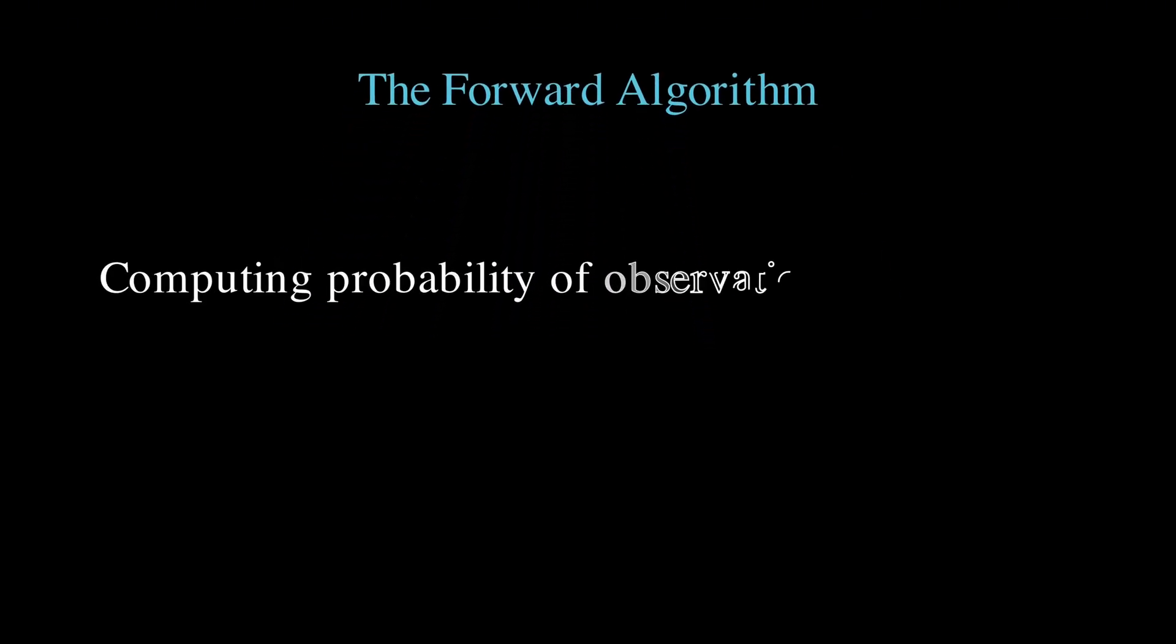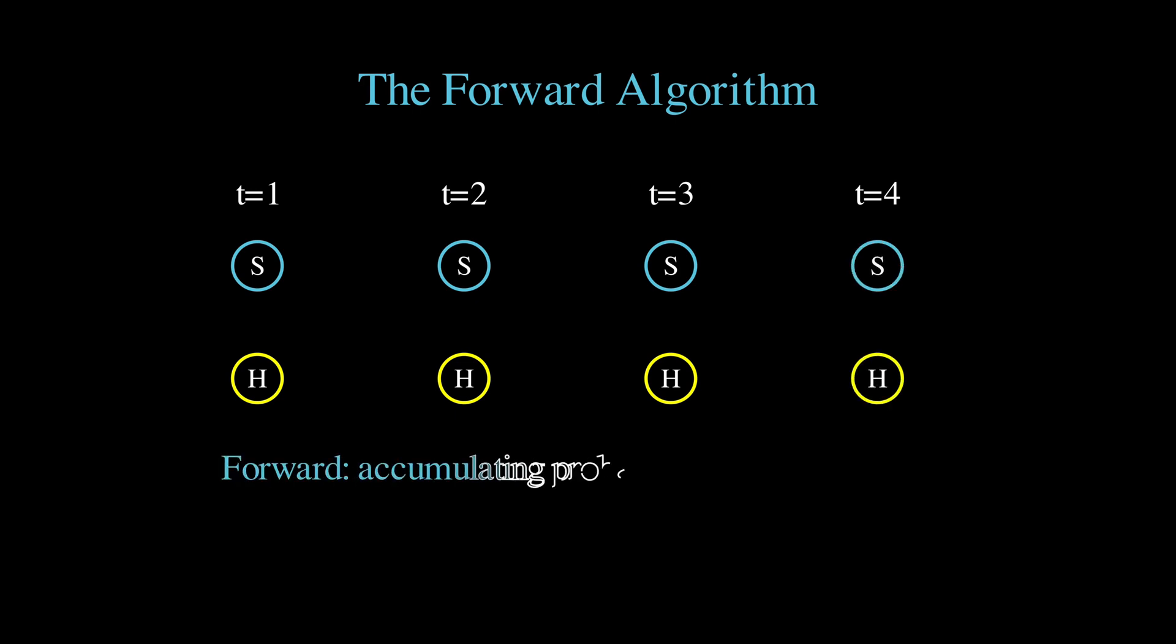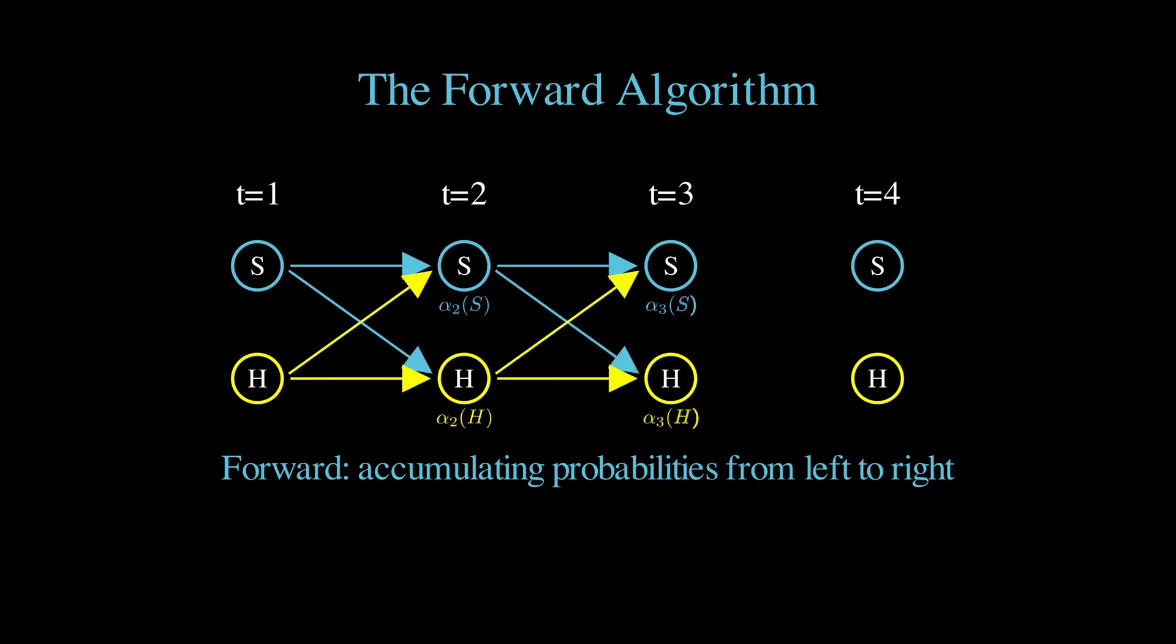The forward algorithm starts from the beginning and computes alpha t of i, which represents the probability of seeing all observations up to time t and being in state i at that time. So, if we are at day two and considering the sad state, alpha two of sad tells us the probability of seeing the red hat on day one, the green hat on day two, and ending up in the sad state on day two.